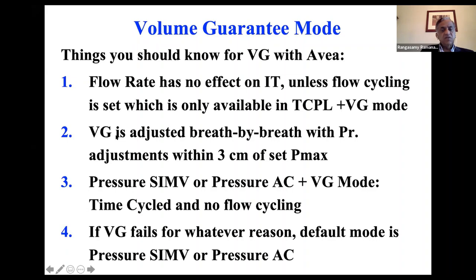VG is adjusted breath-by-breath with pressure adjustments within 3 centimeters of the maximum pressure you set. Pressure SIMV or pressure assist control plus VG mode is time-cycled with no flow cycling. If you want flow cycling, use TCPL plus VG mode. That's why I use TCPL plus VG in my unit, although there is nothing wrong with using SIMV or pressure AC combined with VG mode.